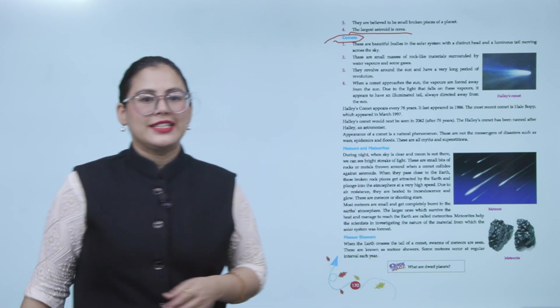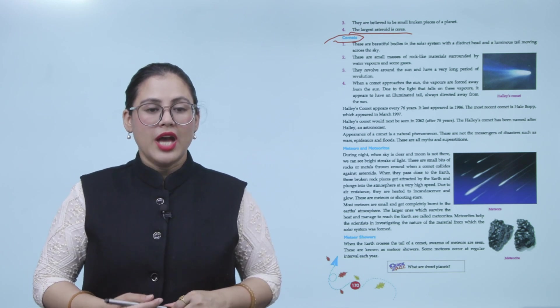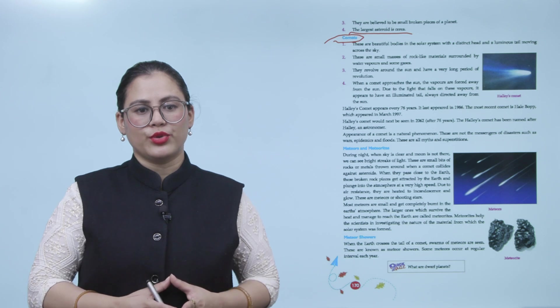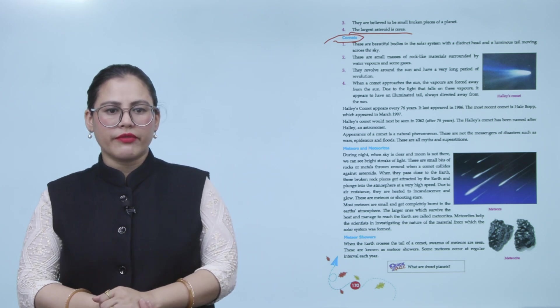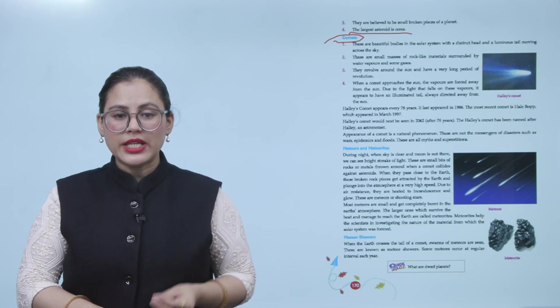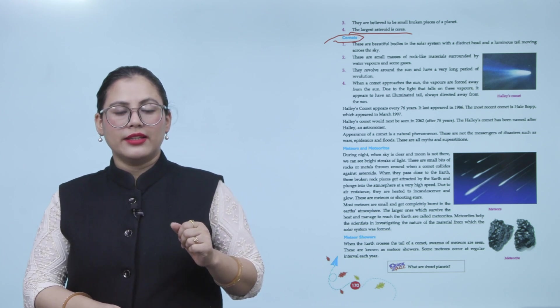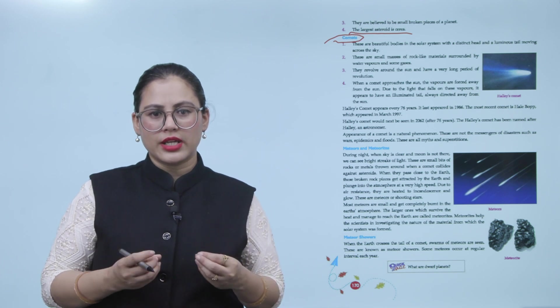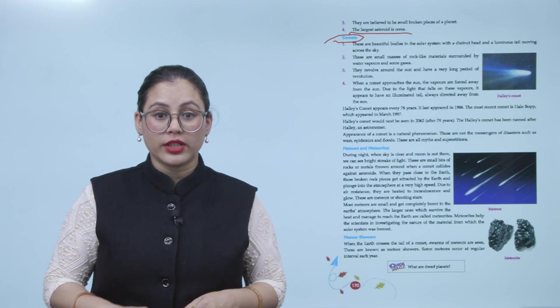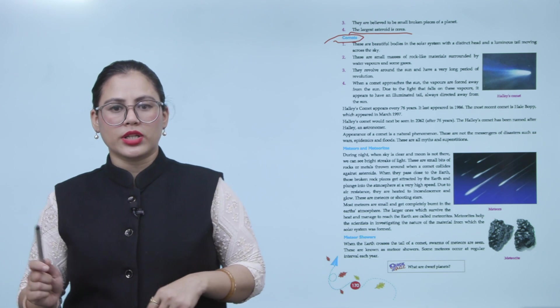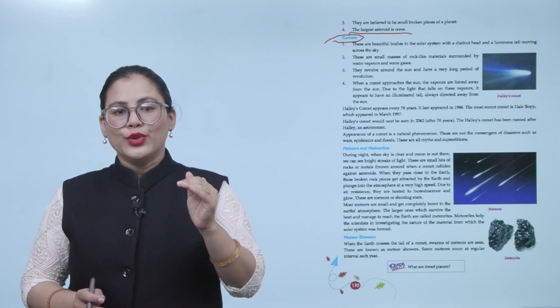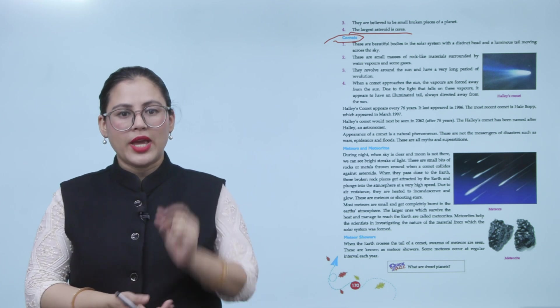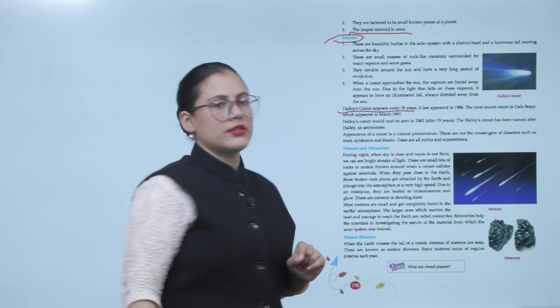Next member: Comet. These are beautiful bodies in the solar system with a distinct head and a luminous tail moving across the sky. Number two: These are small masses of rock-like materials surrounded by water vapors and some gases. Number three: They revolve around the sun and have a very long period of revolution. Number four: When a comet approaches the sun, the vapors are forced away from the sun due to the light that falls on these vapors. It appears to have an illuminated tail always directed away from the sun. The comet has a distinct head and a luminous tail which moves.